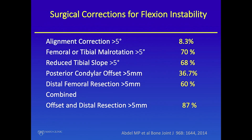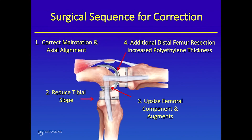It's very common for us to elevate the joint line — we did so in 87% of cases. In 70% of cases, we determined the components were rotated. The question is whether that's causative or just an association where a surgeon who doesn't know how to do flexion-extension balancing also malrotates — it's probably a combination of both.